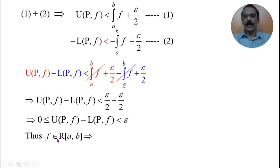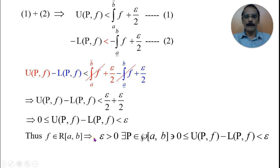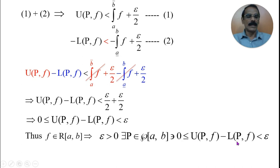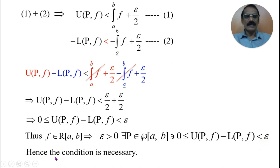Thus, f belonging to R[a, b] implies that for a given epsilon > 0, there exists a partition P of [a, b] such that 0 ≤ U(P, f) − L(P, f) < epsilon. Hence, the necessary condition is proved.